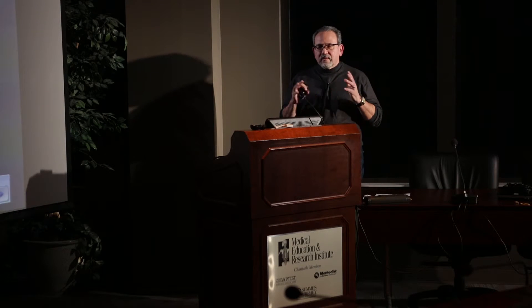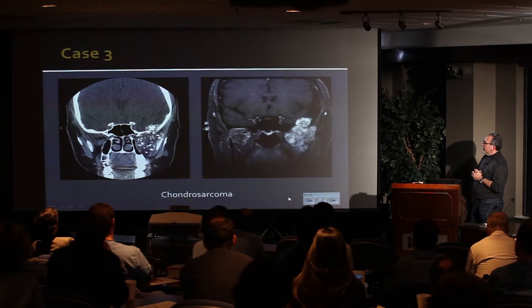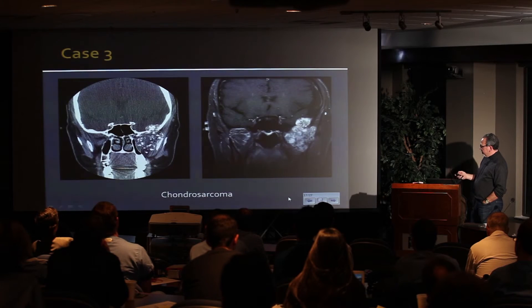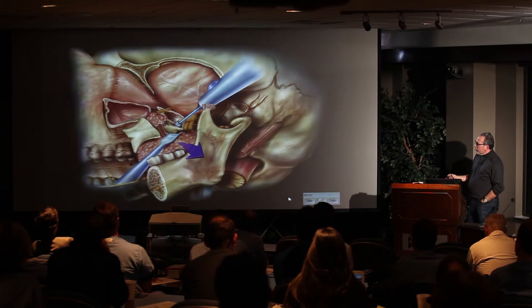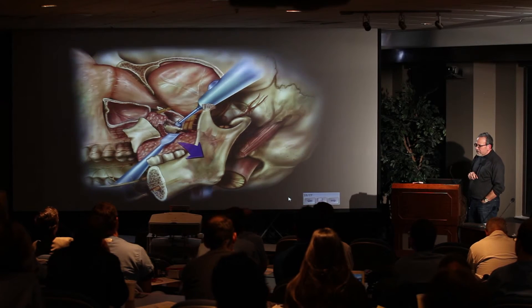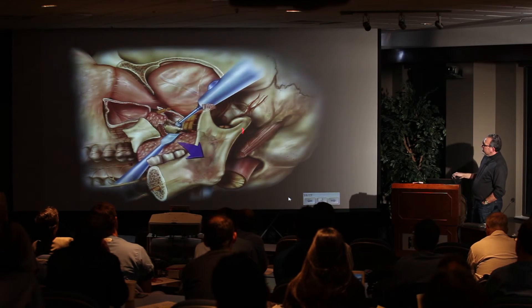Now moving to malignancies — it's a little different, because we want to ideally stay extratumoral to achieve a margin-negative resection. For higher grade malignancies, you want to take out all structures touching the cancer, including the back wall of the maxilla, the mandible, and the entire infratemporal fossa.